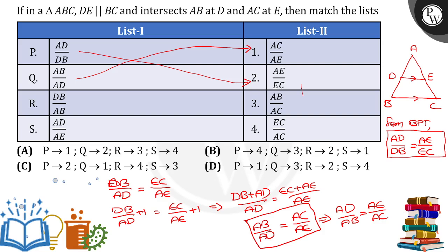And DB by AB is equal to what? So, DB by AB. See, P is equal to 2, Q is equal to 1 from the given four options. If you see options: P to 2 means AD by DB is equal to AE by EC. Q to 1: AB by AD is equal to AC by AE.